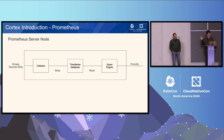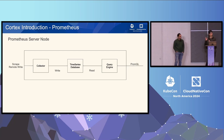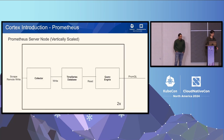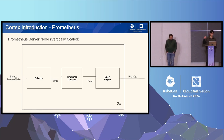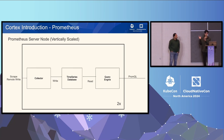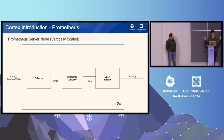The third component is the query part. You have all these metrics in the time series database, and you need to fetch them out, so the query engine in Prometheus is used to query those metrics. But as you start to grow, you'll have more and more metrics come in. In Prometheus, you would normally just scale your instance to have more memory, CPU, and disk, but there's a limit to how much Prometheus can manage because it's really just built for a single node instance.